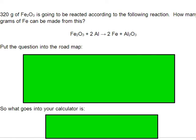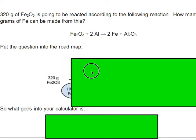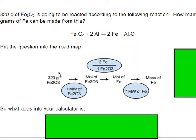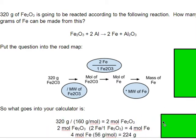Here's a worked example: 320 grams of iron oxide is reacted and we want to know how many grams of iron can be made. On the roadmap: start with 320 grams of iron oxide, divide by the molar mass of iron oxide to get moles of iron oxide, use the ratio of two iron to one iron oxide from the equation to get moles of iron, then multiply by the molar mass of iron to get grams of iron. Working through this on a calculator gives 224 grams of iron.